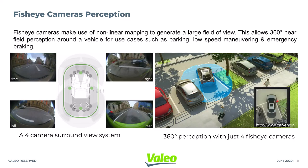Fisheye cameras make use of non-linear mapping to generate a large field of view. With just four cameras, we can achieve a dense 360-degree near-field perception, making them suitable for applications like automated parking, low-speed maneuvering, and emergency braking.